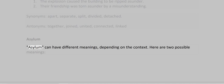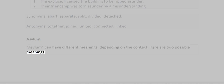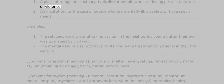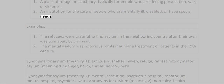Asylum. Asylum can have different meanings depending on the context. Here are two possible meanings: 1. A place of refuge or sanctuary, typically for people who are fleeing persecution, war, or violence. 2. An institution for the care of people who are mentally ill, disabled, or have special needs.